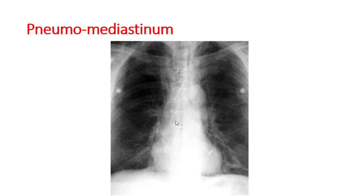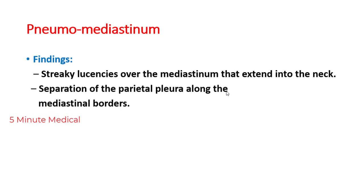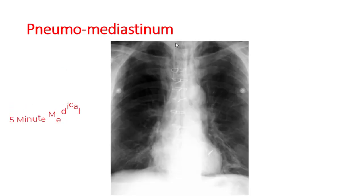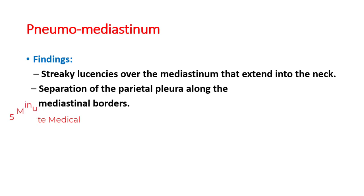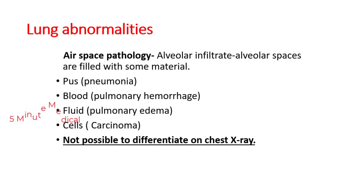Pneumomediastinum may be caused by CABG — coronary artery bypass graft surgery — where air enters the mediastinum. Key findings include streaky lucencies over the mediastinum extending into the neck and separation of the parietal pleura along the mediastinal border.